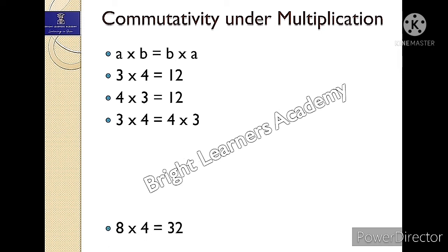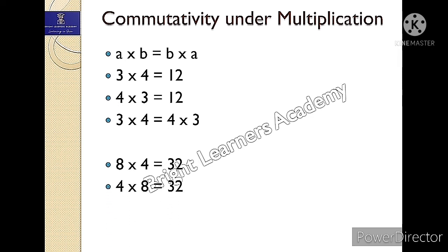Let's take one more example: eight into four is 32 — eight fours are 32. Likewise, four eights are also 32. So we can say eight into four is equals to four into eight. It's similar to addition, but we call it commutativity under multiplication, just as we called it commutativity under addition.